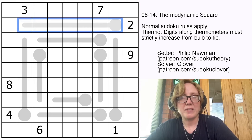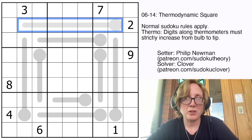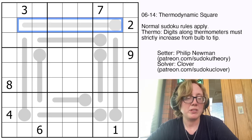They don't necessarily have to increase in consecutive order. There can be gaps, but they do have to always increase as you travel along the line.